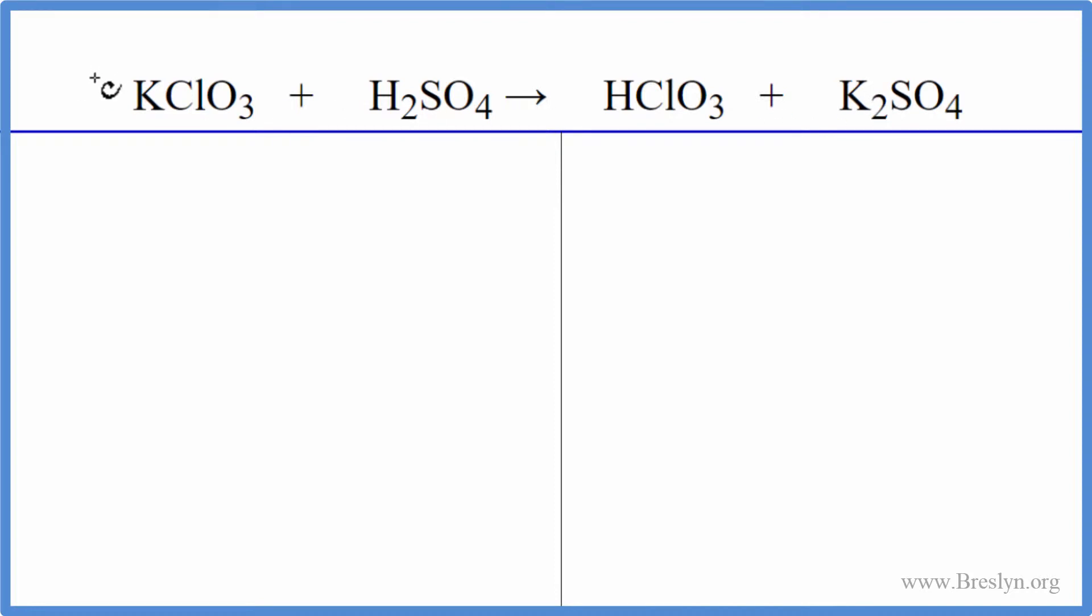You have two Ks here, so maybe we put a two here. Hydrogen, two here. And then we have just one, so we could put a two here. I think that would balance it. If you counted everything up, this would be the correct balanced equation for KClO3 plus H2SO4.